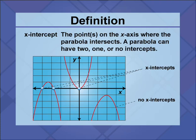X-intercept: the point or points on the x-axis where the parabola intersects. A parabola can have two, one, or no x-intercepts.